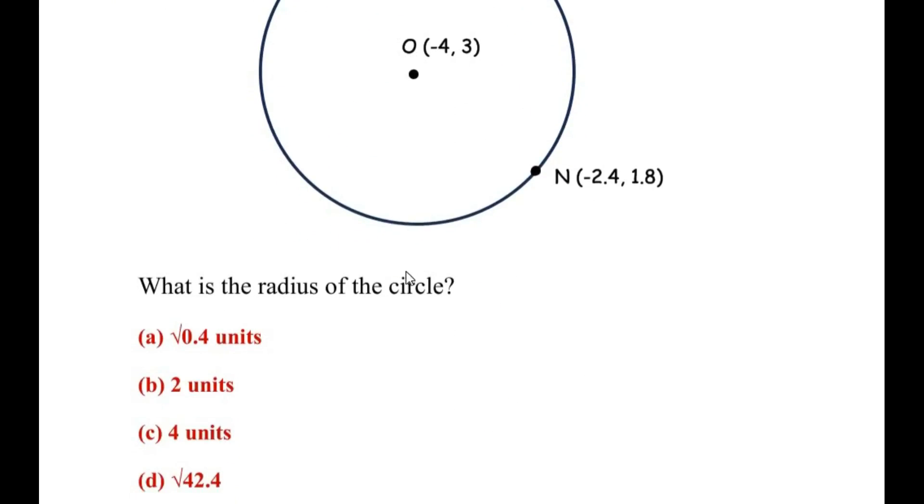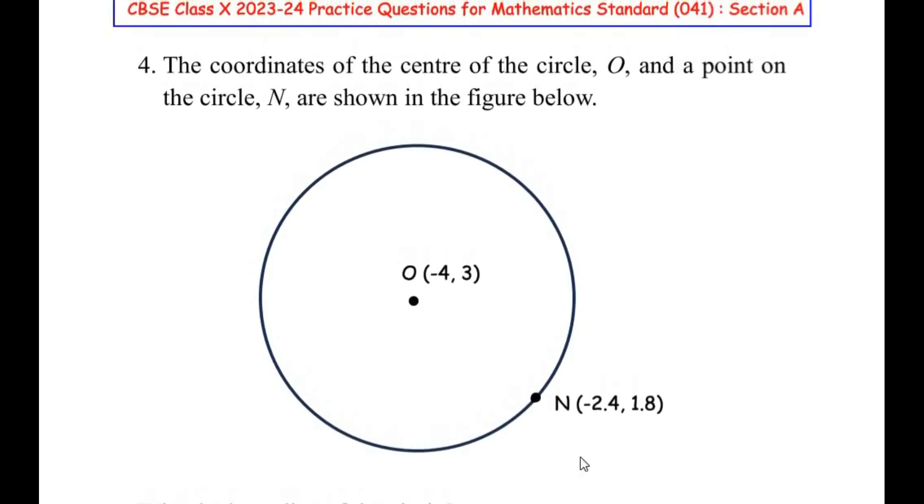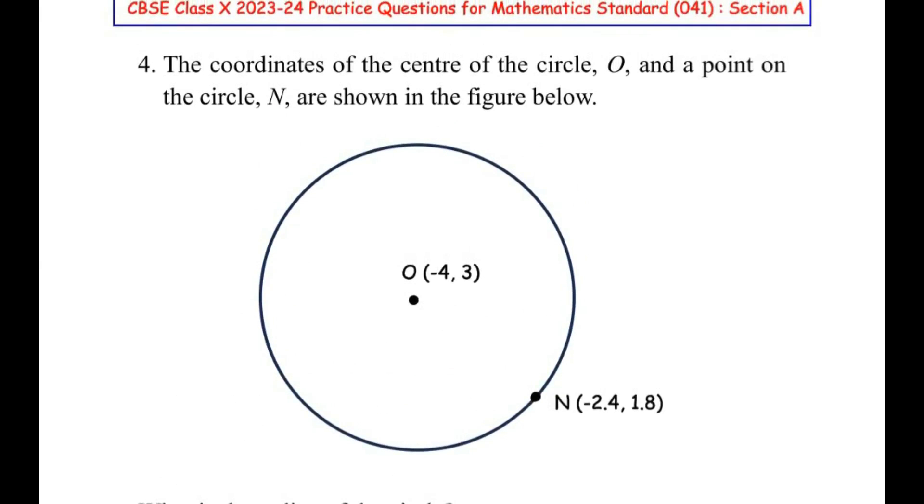Now to find the radius of the circle, let us join the center of the circle with the point N. So this is the radius of the circle. Now to find the radius we have to use the distance formula.